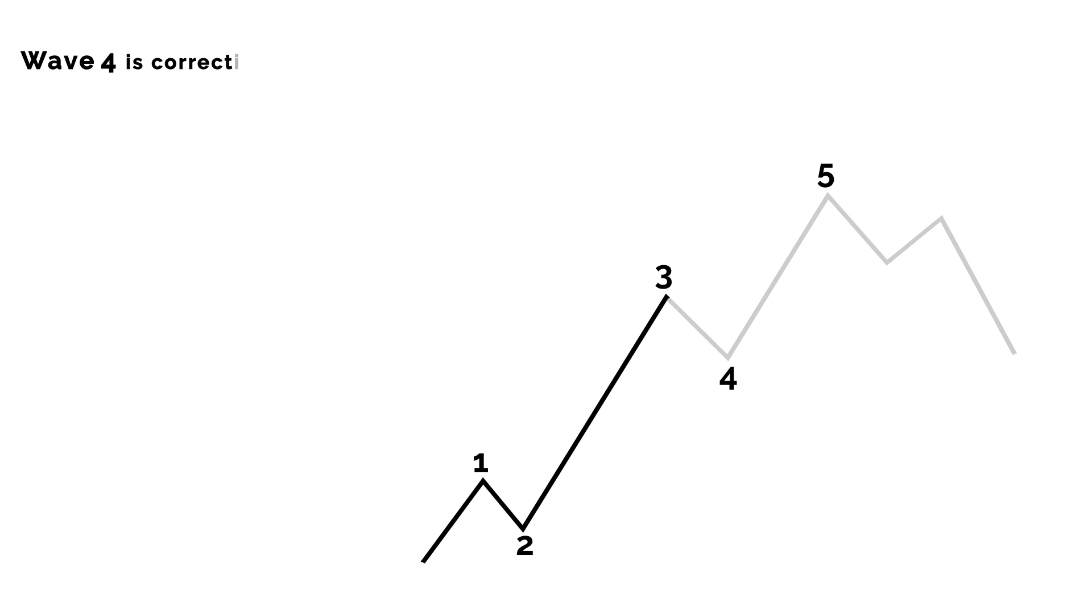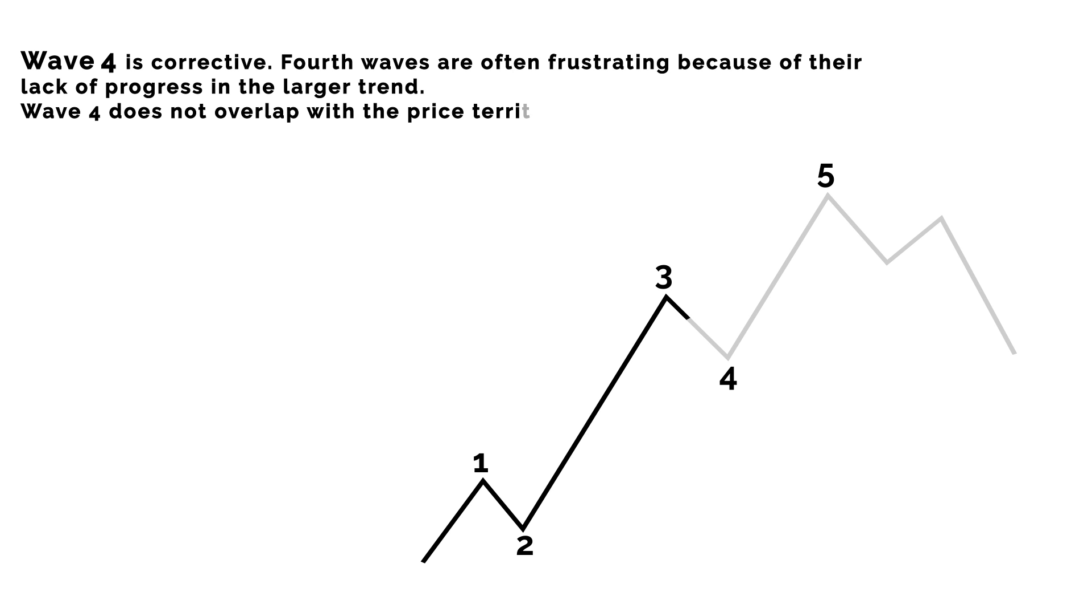Number 4, Wave 4. Wave 4 is typically corrective. Fourth waves are often frustrating because of their lack of progress in the larger trend. Wave 4 does not overlap with the price territory of Wave 1, except in the case of a diagonal. It often takes the structure of flat, triangle, or irregular correction. We at Elliott Wave Forecast do not label a Wave 4 if it passes 50% Fibonacci retracement of Wave 3, unless it is a diagonal.